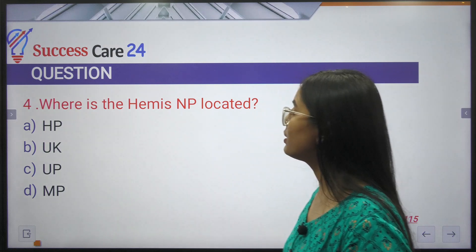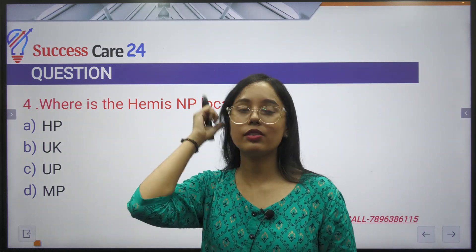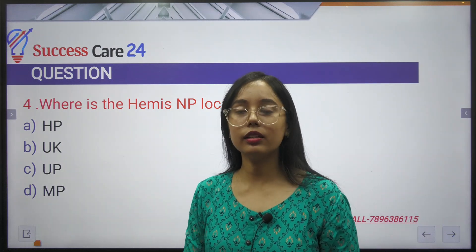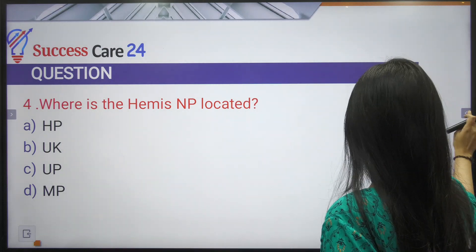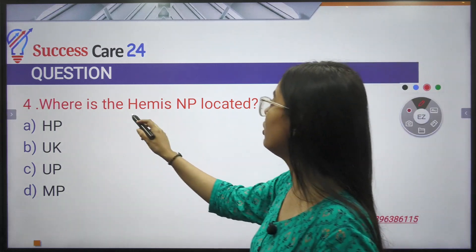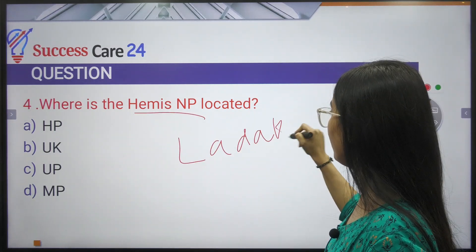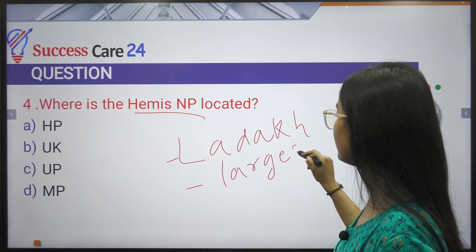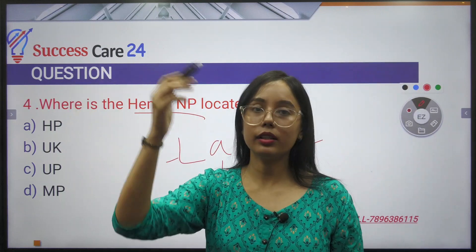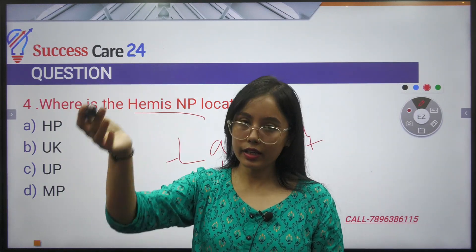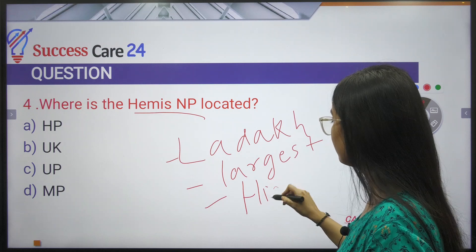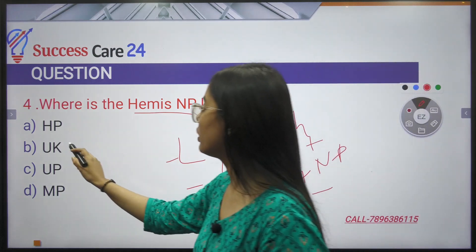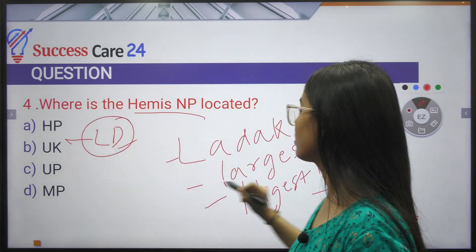Where is Hemis National Park located? It is located in the Ladakh region. The answer is Ladakh. It is the largest national park and also the highest national park in India, as it is situated at the highest altitude. So the answer is Ladakh.